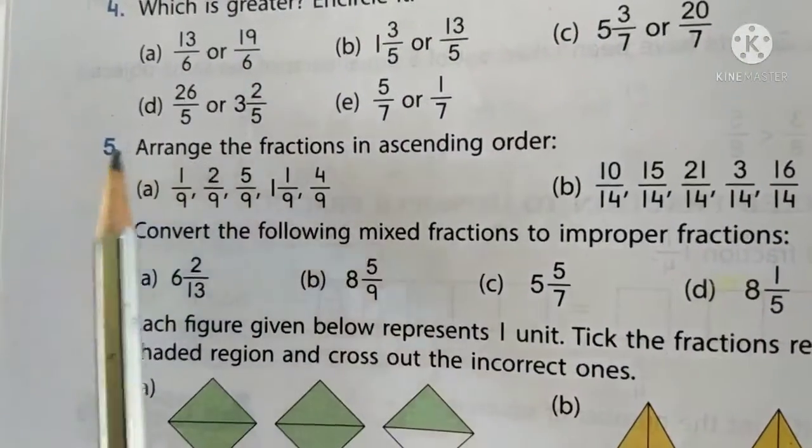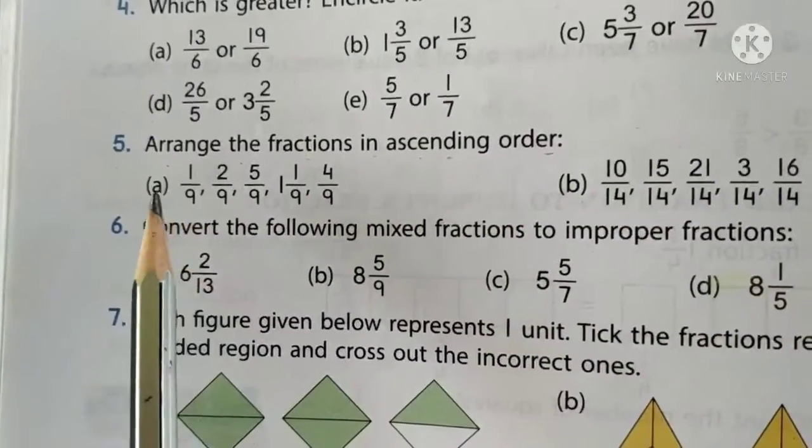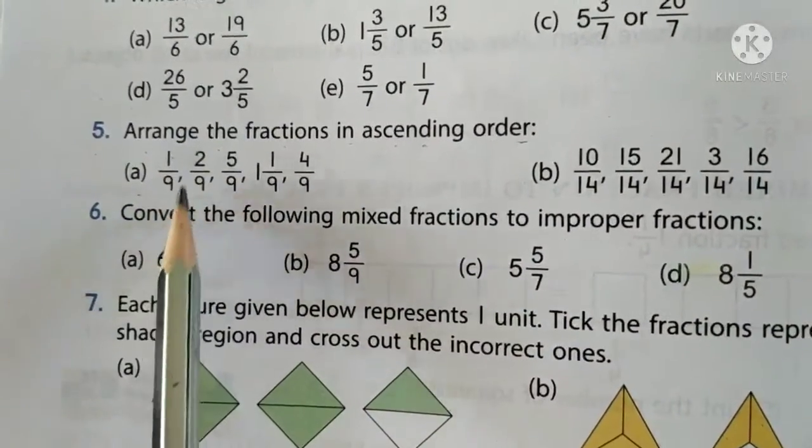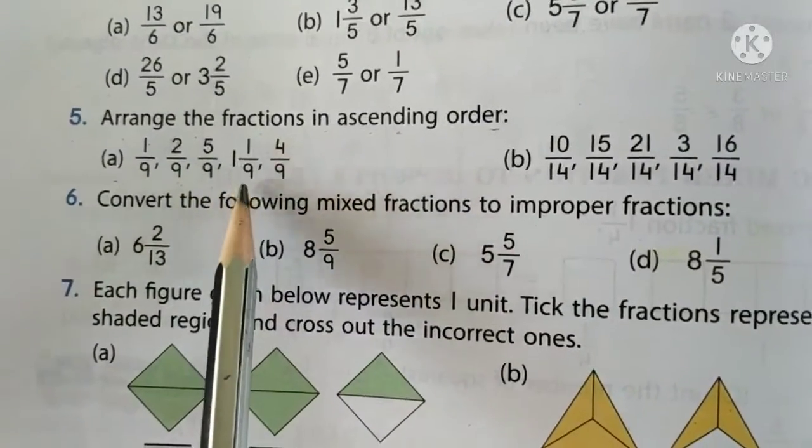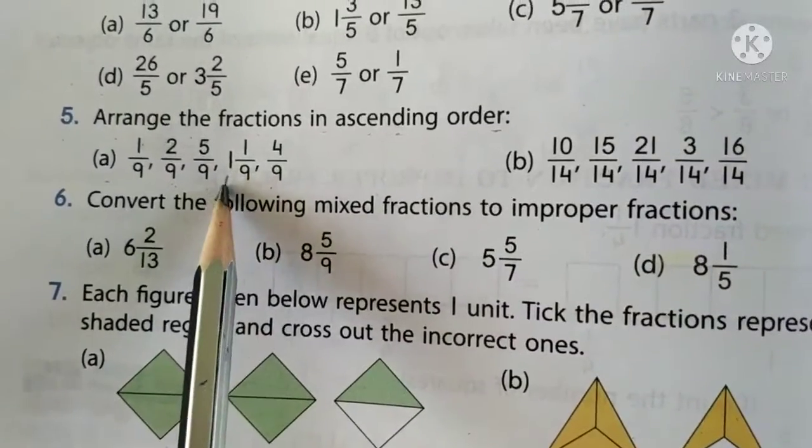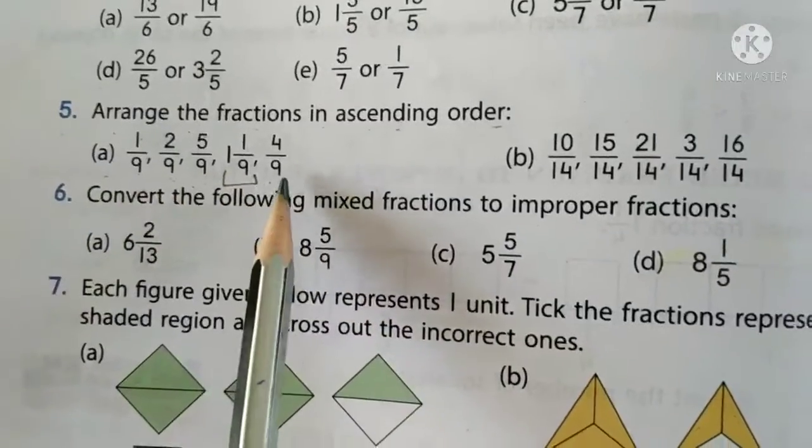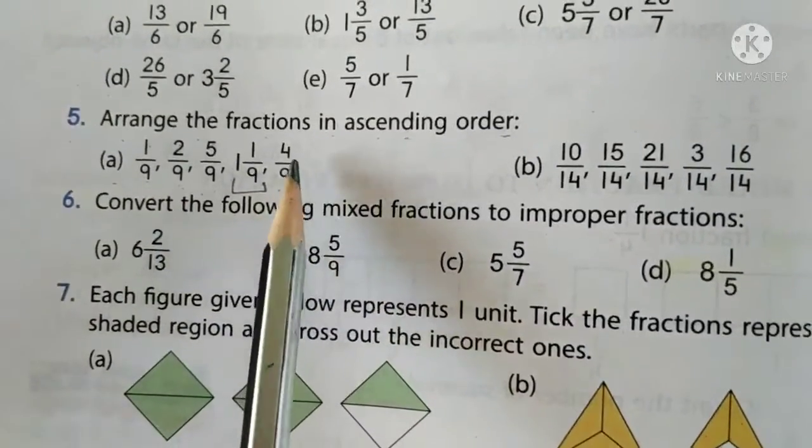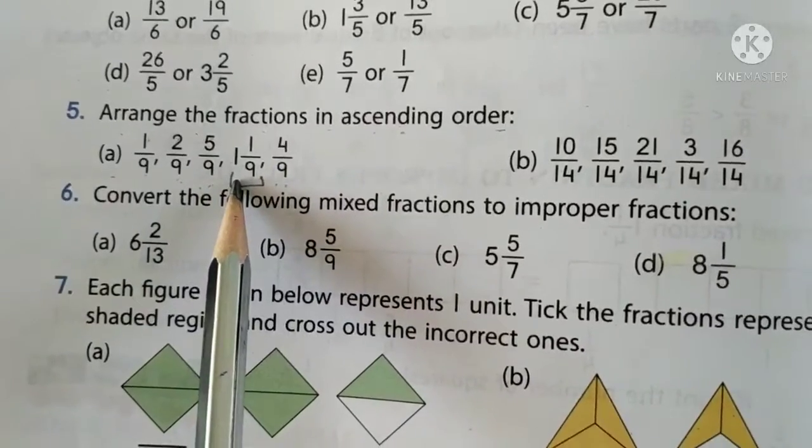Question 5. Arrange the fractions in ascending order. Children, we will be doing the A part. We have 1 by 9, 2 by 9, 5 by 9, 1 1/9 and 4 by 9. Children, if you look carefully, this is a mixed fraction. The others are proper fractions. So we cannot compare them when one is a mixed fraction.